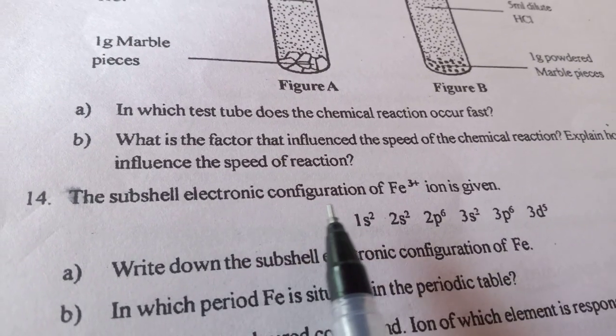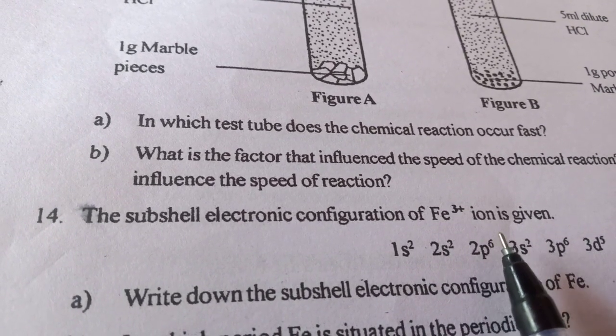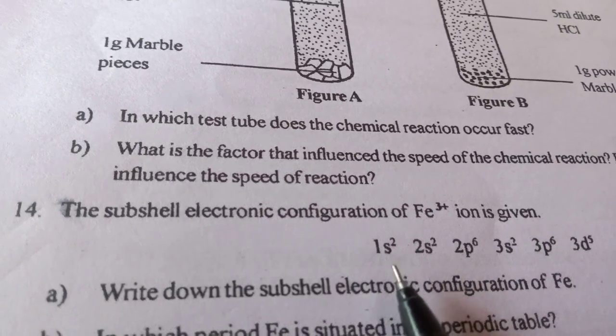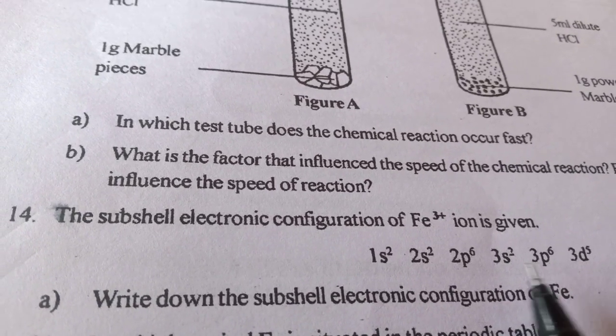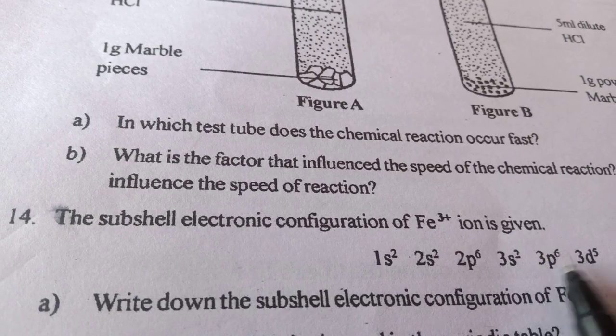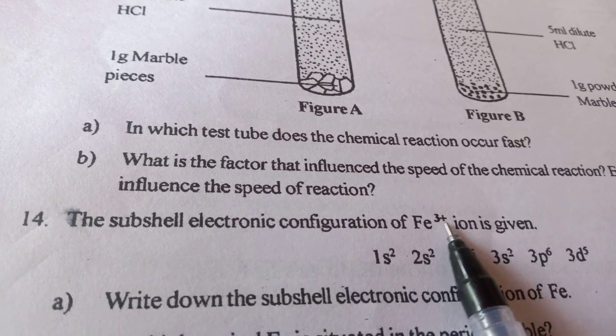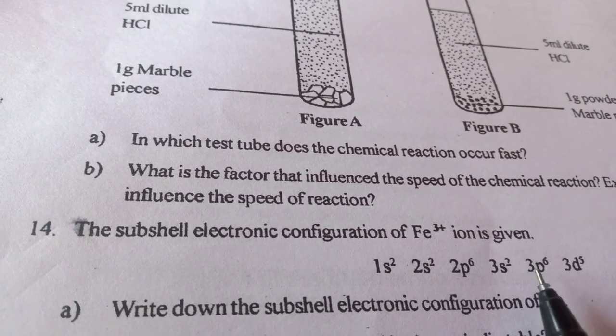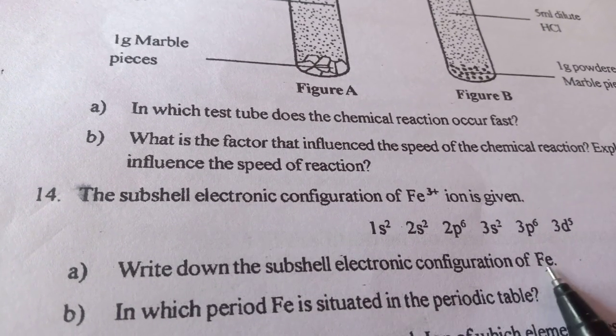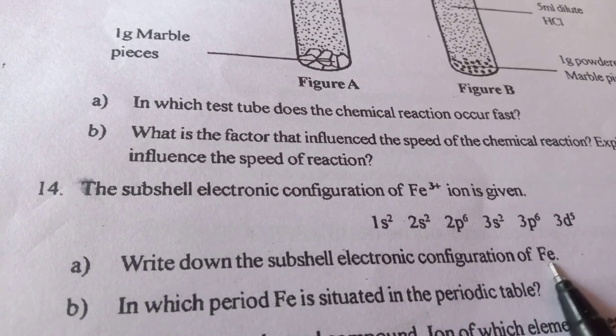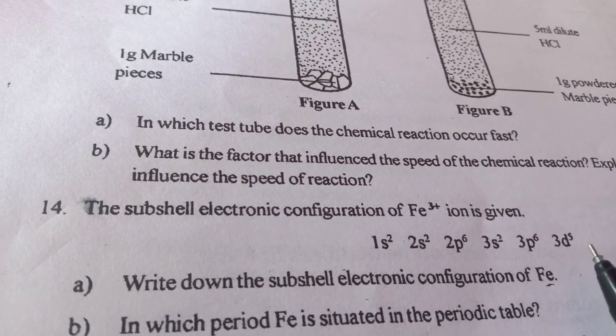The subshell electronic configuration of Fe3+ ion is given: 1s2, 2s2, 2p6, 3s2, 3p6, 3d5. When it is in the ionic form, it will give out 3 electrons, that is 3 positive ions. If we write down the subshell electronic configuration of Fe, they are asking Fe, then we have to add 3 more electrons to this ion.